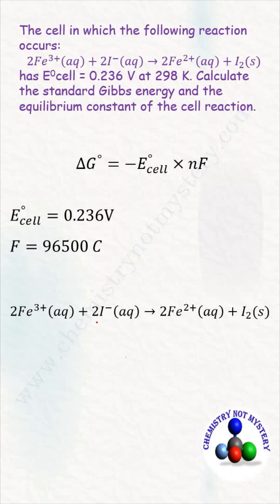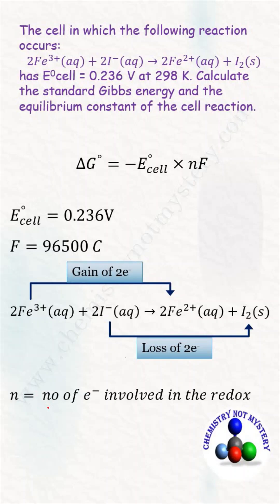In this reaction, I⁻ oxidizes to I₂ by the total loss of 2 electrons, while Fe³⁺ reduces to Fe²⁺ by the total gain of 2 electrons. So the value of n will be equal to 2.